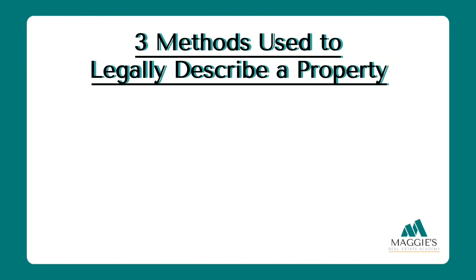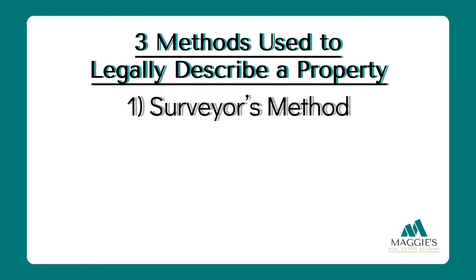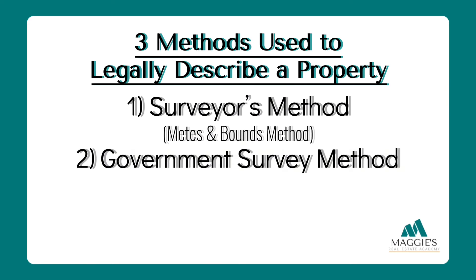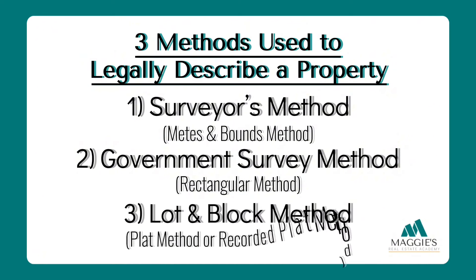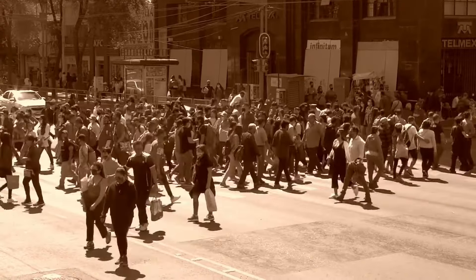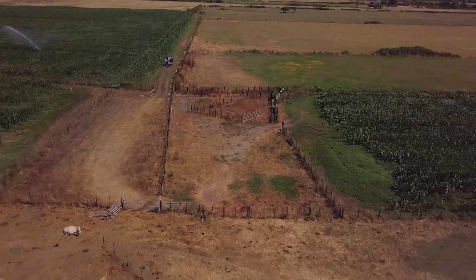There are three different methods to legally describe a property: number one, the surveyor's method or metes and bounds; number two, the government survey method, also called the rectangular method; and number three, the lot and block method, also called the plat or recorded plat method, which is the most widely used today. To truly understand property descriptions, we need to step back in time — property descriptions date back centuries and were crucial for land ownership and legal documents, sometimes even etched onto stone markers.